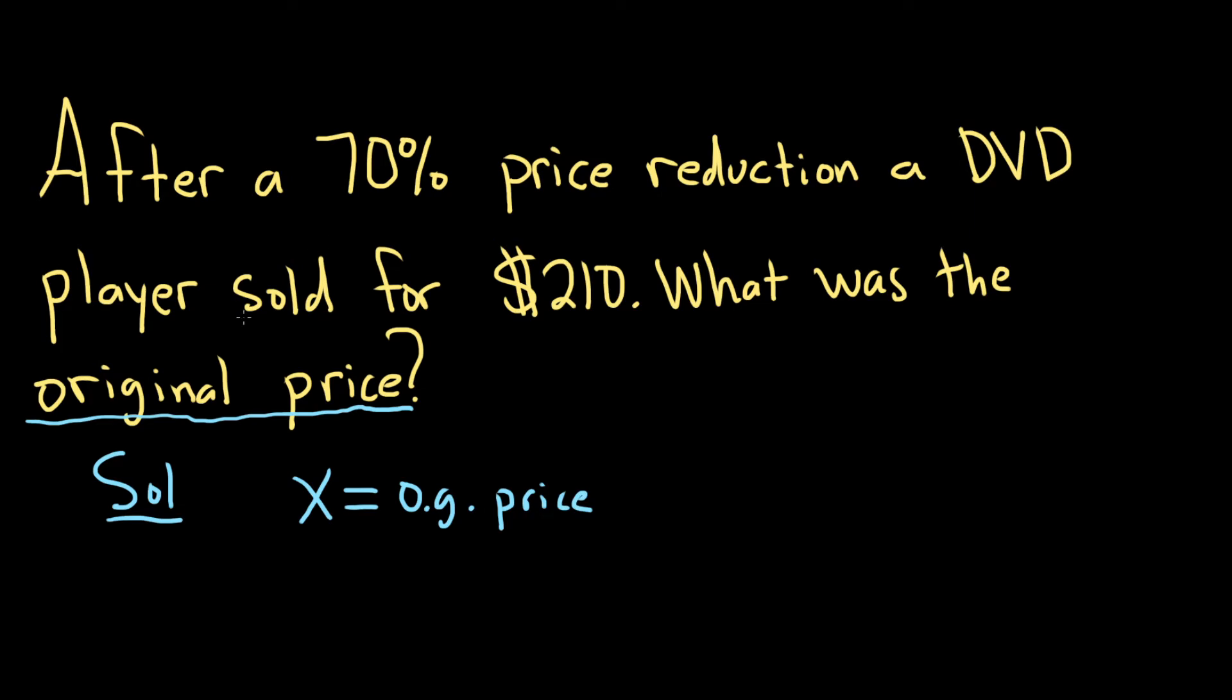And we're told how much the DVD player sells for in two different ways. We're told that it sells for $210. And then we're also told that it sells at a 70% price reduction. So using this information, we can create an equation.